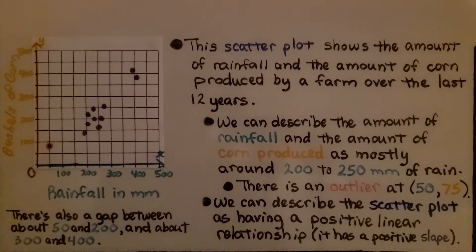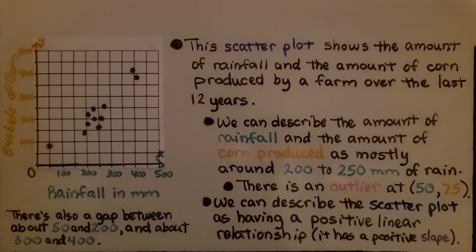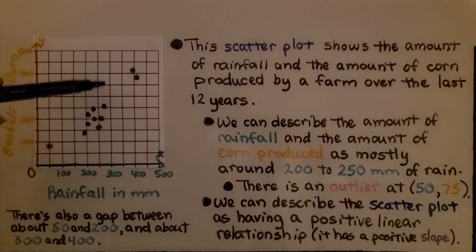We can describe the scatter plot as having a positive linear relationship. It has a positive slope to it. There's also a gap between about 50 and 200 and about 300 and 400.